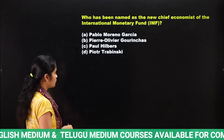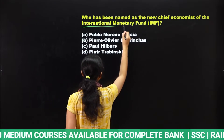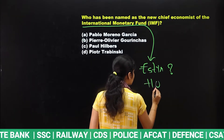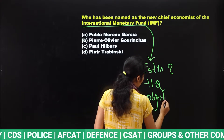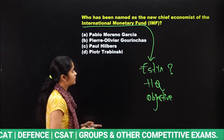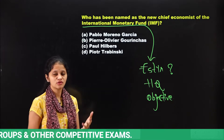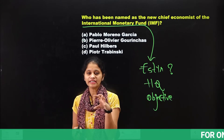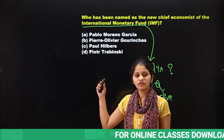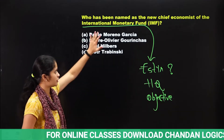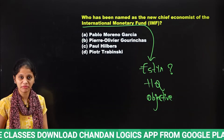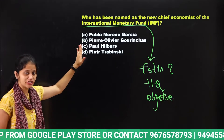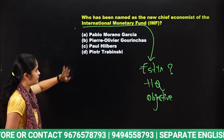Let us look at our first question, which is based on appointments. From appointments, the areas you have to concentrate on are: the static GK — such as established year and headquarters if applicable — then the objective or initiative of the organization, which in this case is the IMF (International Monetary Fund). Recently a new chief economist has been appointed for the IMF. You need to know the name of the person, the organization, and the basic idea about the institution.